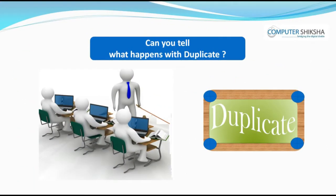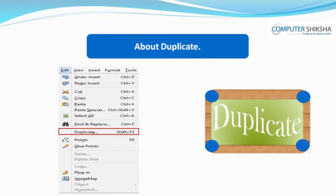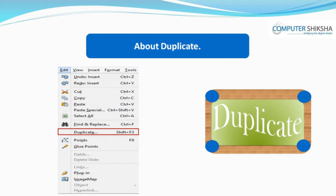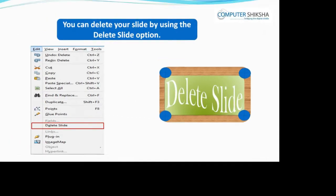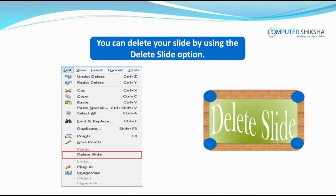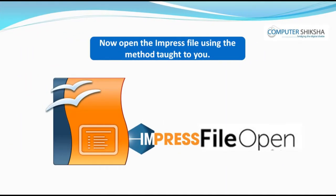Can you tell what happens with duplicate? With duplicate, you can make many copies of a single image which will be exactly like the original. Do you know what happens with delete slide? You can delete any of your slides with delete slide. Now, all of you switch on your computers and open the impress file using the method taught to you.